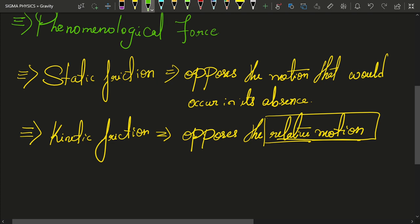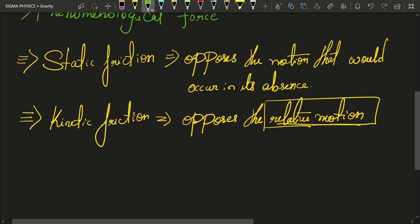So, how do you find friction in any body? How do you find the force of friction between two bodies? Now, you should know that friction, experimentally, friction is found to be proportional to normal reaction.